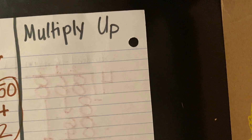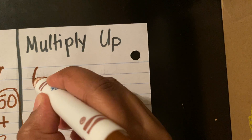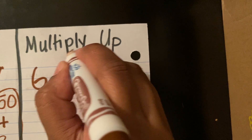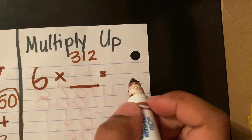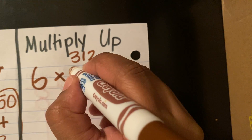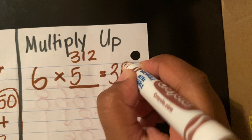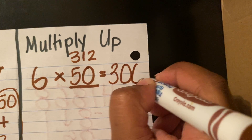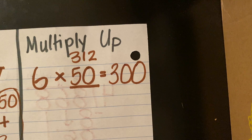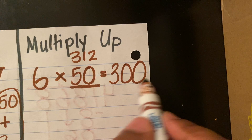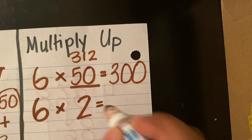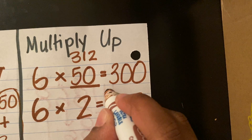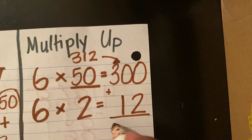Let's try this again using multiply up. We're going to start with our divisor, which is six, and we're going to try to get to 312. Six times what will give me as close as possible to 312? I know that six times five is 30, so I'm going to add a zero to get 300. Six times 50 equals 300. I know that six times two equals 12. If I add these up, I know that I will arrive at 312.